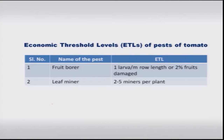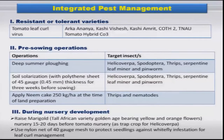The economic threshold levels are: for fruit borer, 1 larva per meter row length or 2 percent fruit damage; for leaf miner, 2 to 5 mines per plant. Monitoring of these pests and timely management is essential, and we can look at important IPM strategies.